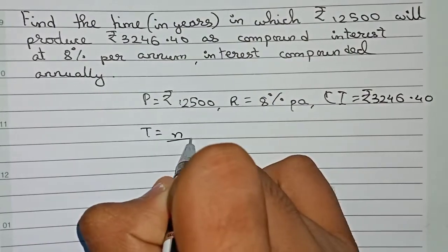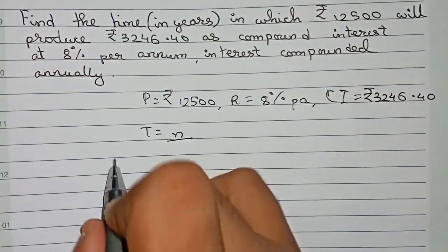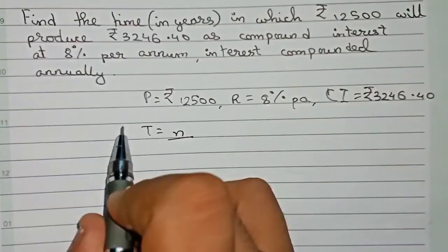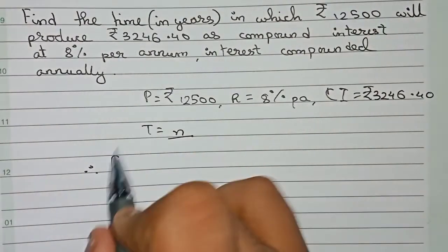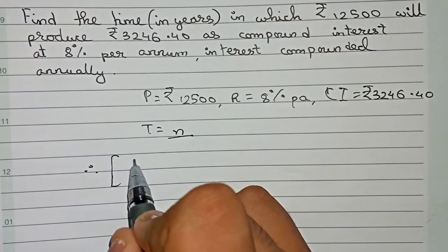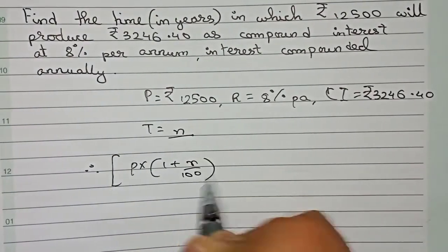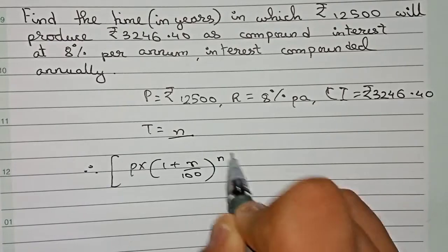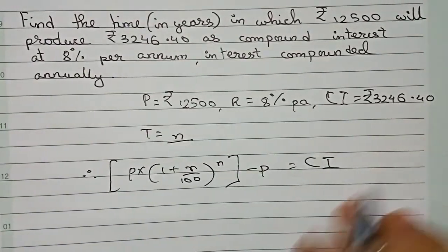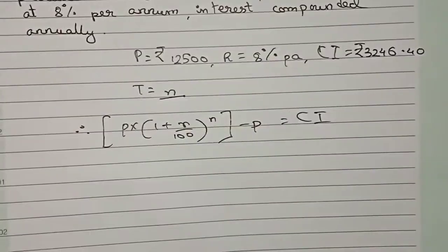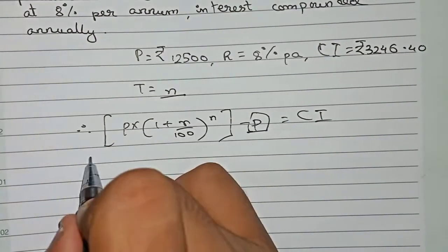We have to find the value of n. So first we have the formula for compound interest. The formula is: CI = Principal × (1 + R/100)^n − Principal.